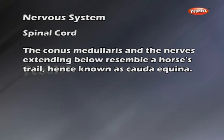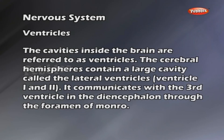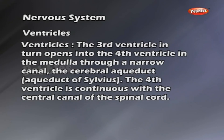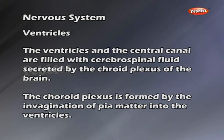Ventricles: The cavities inside the brain are referred to as ventricles. The cerebral hemispheres contain a large cavity called the lateral ventricles (ventricles 1 and 2). These communicate with the third ventricle in the diencephalon through the foramen of Monroe. The third ventricle in turn opens into the fourth ventricle in the medulla through a narrow canal called the cerebral aqueduct (aqueduct of Silvius). The fourth ventricle is continuous with the central canal of the spinal cord. The ventricles and the central canal are filled with cerebrospinal fluid secreted by the choroid plexus of the brain, which is formed by the invagination of pia mater into the ventricles.